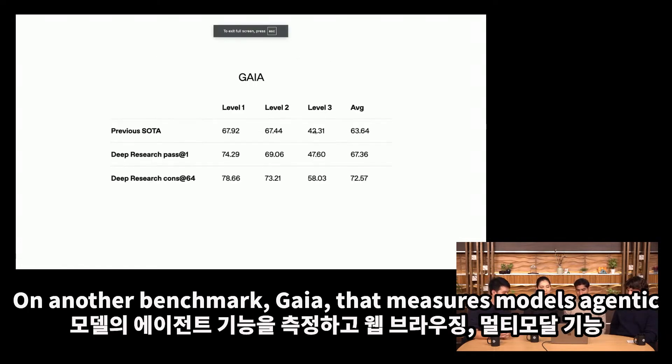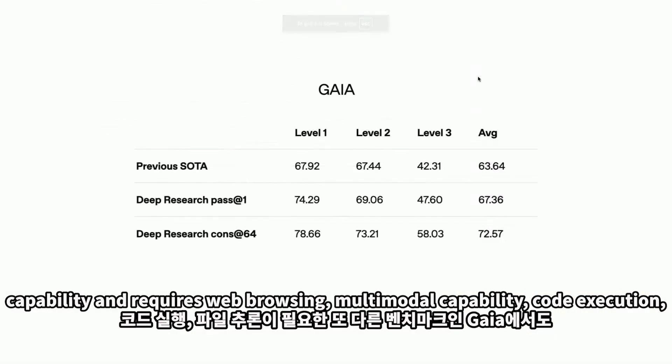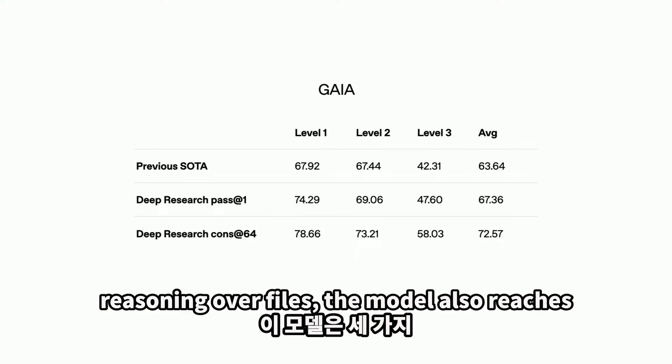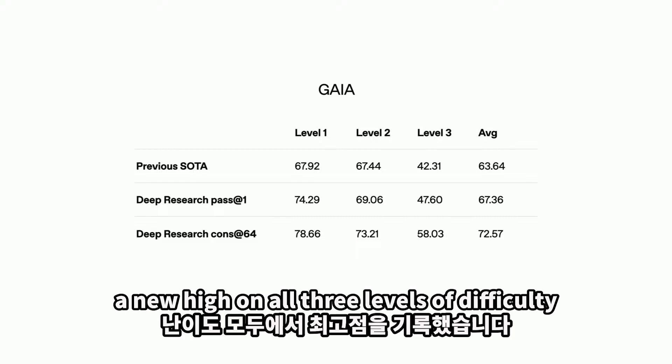On another benchmark, Gaia, that measures models' agentic capability and requires web browsing, multimodal capability, code execution, and reasoning over files, the model also reaches a new high on all three levels of difficulty.